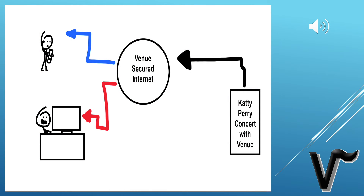The way Venue works is really complex, so let's sum it up with this simple illustration. Katy Perry will have a concert, and with Venue we will have the power to stream this concert straight through a Venue-secured internet connection. From there, depending on which platform you're watching on — whether mobile or at home — you'll be able to watch that Katy Perry concert from anywhere, even if you're in Long Beach or all the way in Amsterdam.